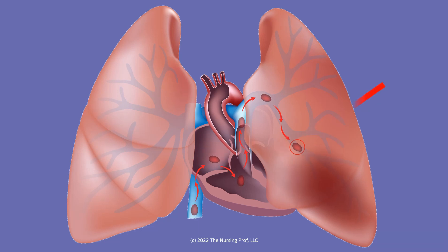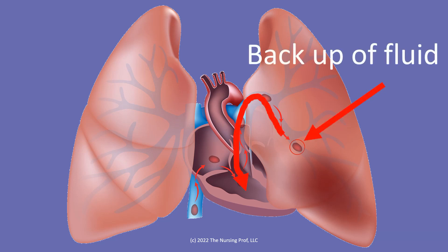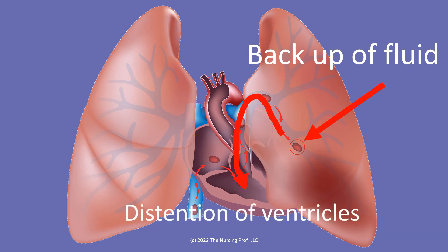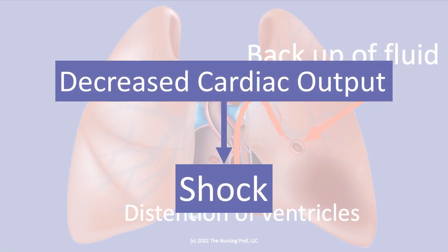If we take a look at that embolus from the standpoint of the backup of fluid that's occurring, we can see that the blood is going to start to back up into the heart, back into the ventricle. Because normally we would have blood flowing through those vessels through the lung, coming back to the left side. Now though, because this embolus is blocking the vessel, some of that blood is being pushed back into the heart, and that's going to cause distension of the ventricles and decreased cardiac output. That's where we get our shock from and the hypotension. All of these things are going to cause decreased cardiac output and that's going to lead to the patient developing shock.